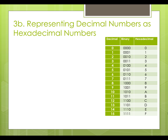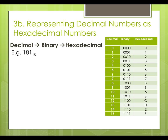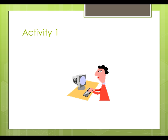To represent decimal numbers as hexadecimal numbers, we will first convert the decimal number to its binary representation, and then from binary to its hexadecimal representation. For example, the decimal number 181 can be represented by 10110101. 1011 corresponds to hexadecimal b, and 0101 corresponds to hexadecimal 5. So decimal number 181 can be represented by hexadecimal b5. It is your turn now. Complete the tasks in Activity 1 before you move on to Lesson 2.